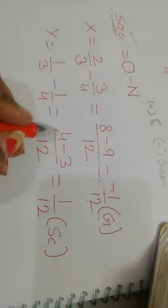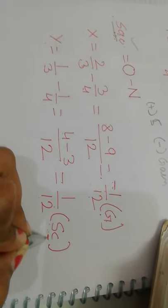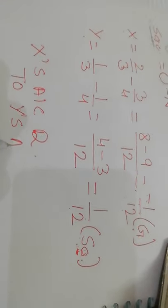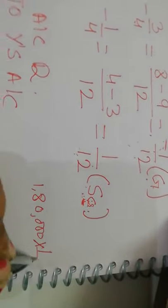Y's ratio gives 4 minus 3 = 1/12, answer is positive, which means Y is sacrificing. Sacrifice means credit, so Y's account will be credited. X's account will be debited. The goodwill amount is 1,80,000. Using the sacrificing ratio of 1/12: 1,80,000 × 1/12 = 15,000.